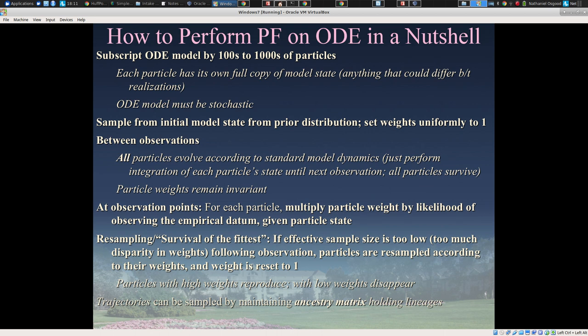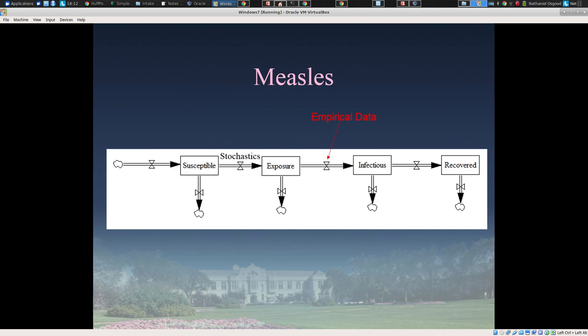These weights are associated with the notion of sequential importance sampling. A particle of twice the weight counts twice as much when we sample. When the particle weights become too diverse — when the effective sample size associated with them is too low — we undergo a resampling. Basically, particles with high weights reproduce and those with low weights are likely to disappear. We draw from the particles according to their weight. It's straightforward to maintain an ancestry matrix which holds the lineage of particles, which allows us to sample not just from a distribution of the current state at a given time, but over trajectories of state over time.